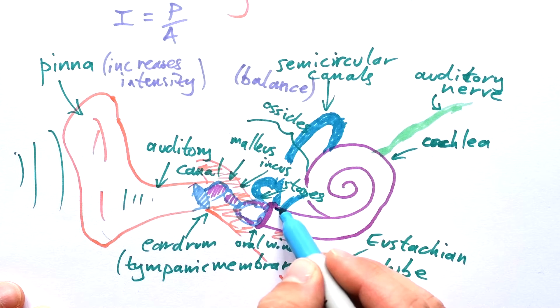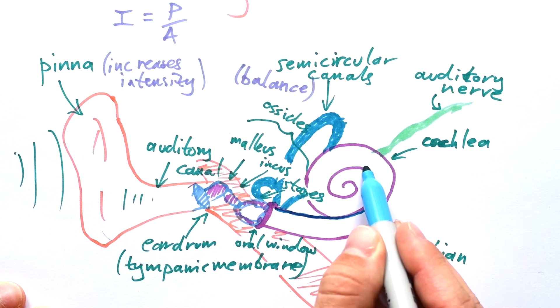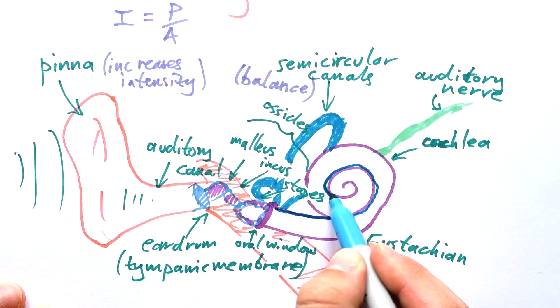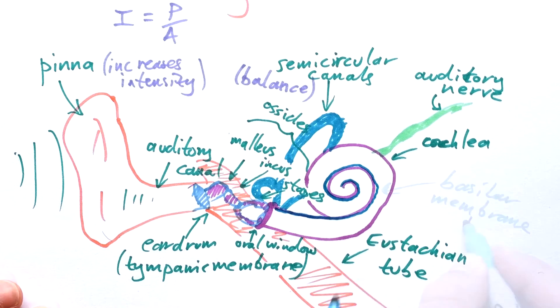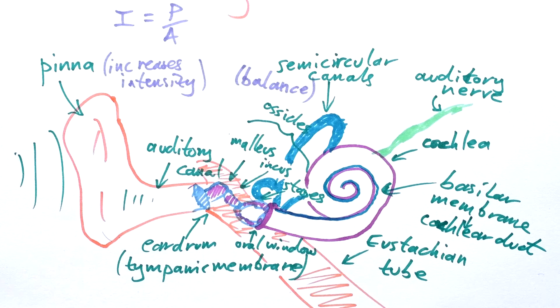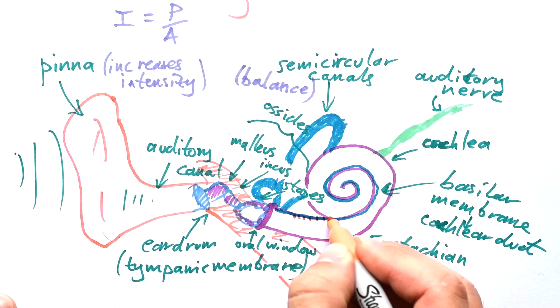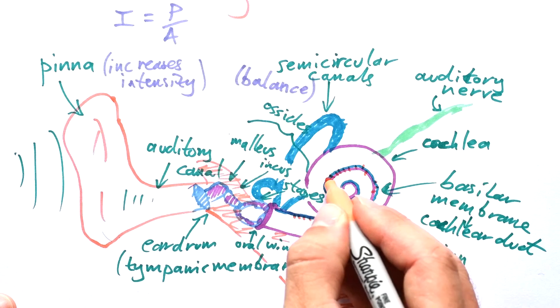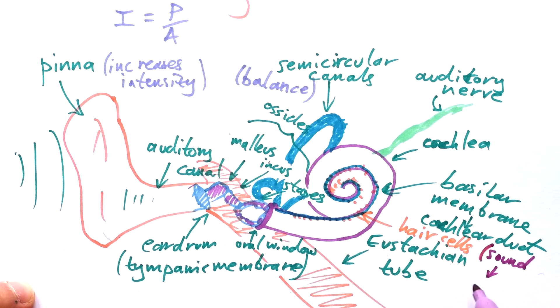The oval window then passes vibrations onto a fluid that fills your cochlea. On the inside of your cochlea it's covered in a membrane called the basilar membrane, and that then connects to the cochlear duct. It's the cochlear duct that's actually connected to the semi-circular canals. But the whole point is that in the cochlear duct, on this membrane, you have these little hair cells, and it's those that take the vibrational energy and turn it into electrical energy, then sent along the auditory nerve to your brain. Pretty impressive stuff.